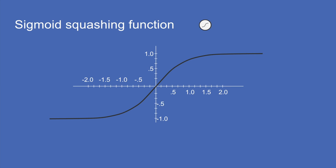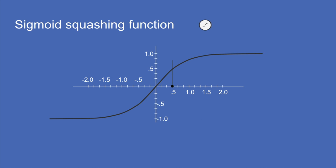After you add the weighted input neurons, they get squashed using a sigmoid squashing function. Sigmoid means S-shaped. You put a value in — say 0.5 — run a vertical line up to the sigmoid curve, then a horizontal line over to the y-axis, and where that hits is your output. In this case it's slightly less than 0.5.